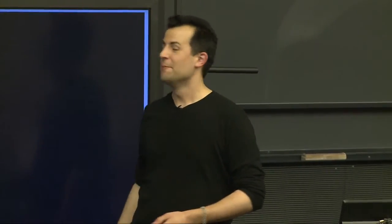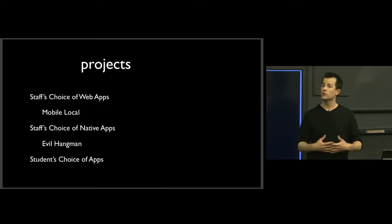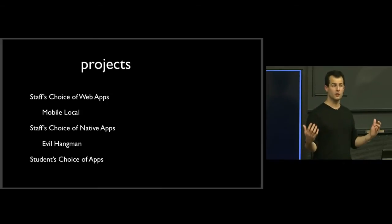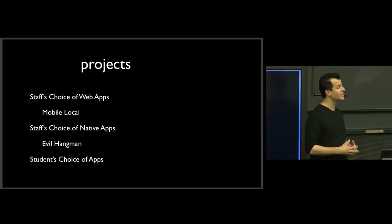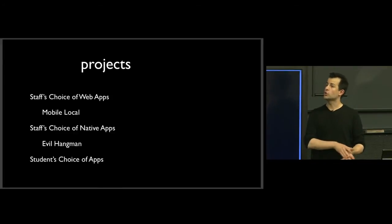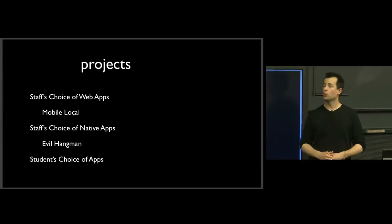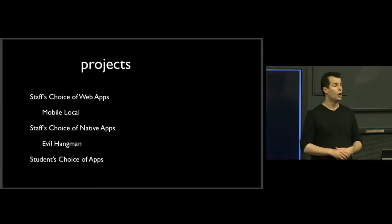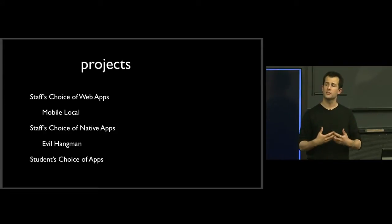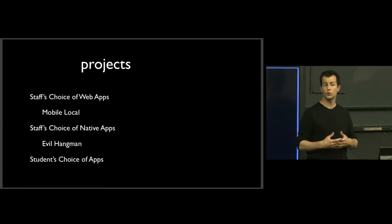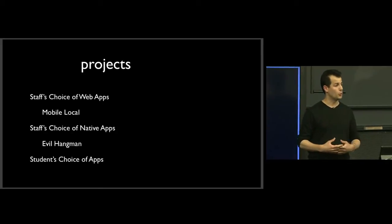Projects are really where you'll get your hands dirty and learn the most. There will be three total projects. Two are our choices of specifications — we'll specify exactly what the challenges are. The third will be your choice: you'll propose it to the staff, then design and implement your own project. The first assigned project is themed 'mobile local' — it will involve using the browser's geolocation API, using open data sets, and mashing things together into an interface that lets users explore news and weather based on their current location.